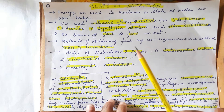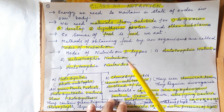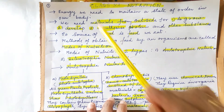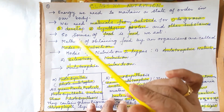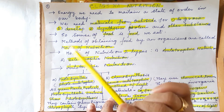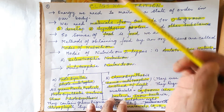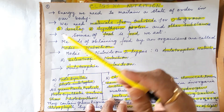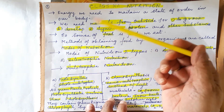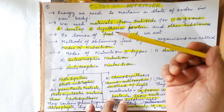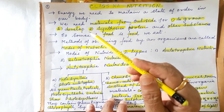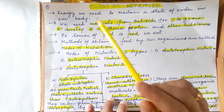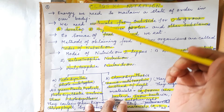First of all, how do all living things get their food? For that, we have to see why they need food at all. They need food to get energy. Energy is needed for external and also internal activities of the body. External activities include movement of the body, working with hands and legs, and all those things.